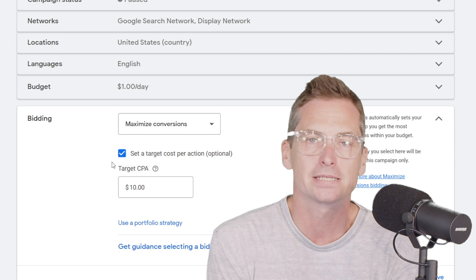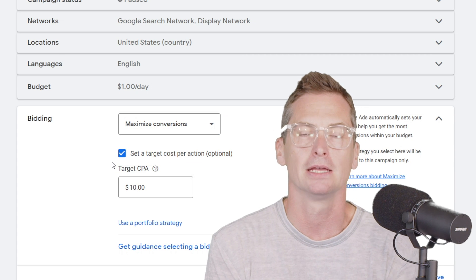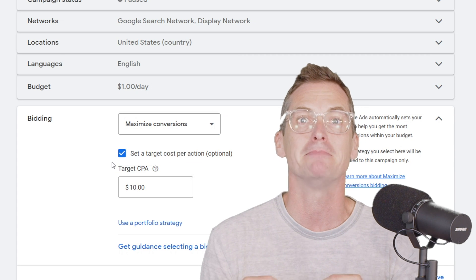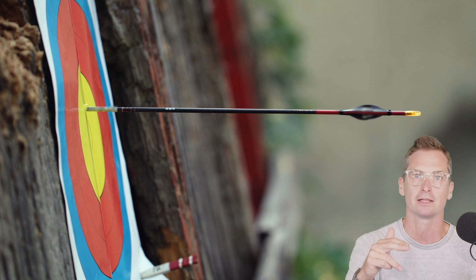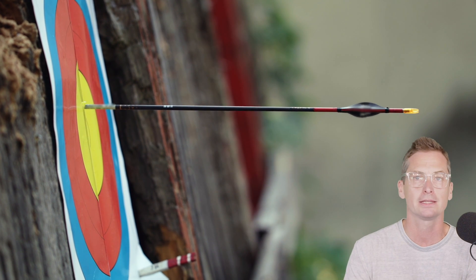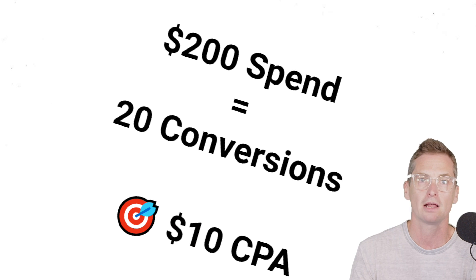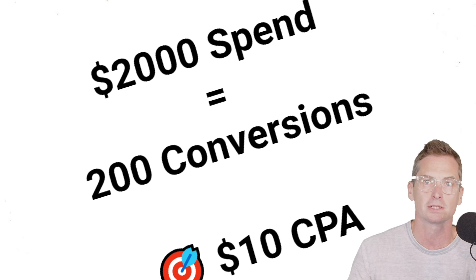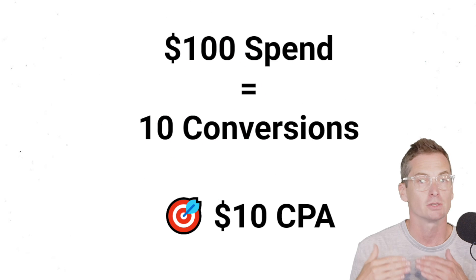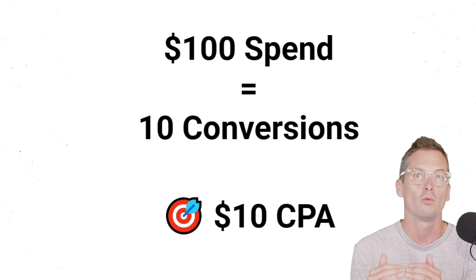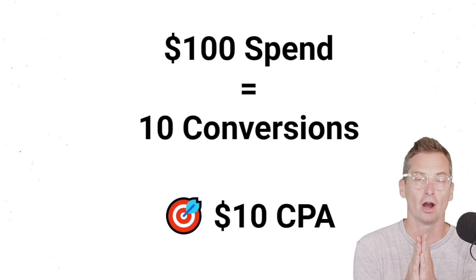The biggest benefit of Target CPA is that it is made to scale. We are shooting at that target, and it doesn't matter if our daily budget is $100 or $200 or $2,000 or $20,000 — we're still going towards that target. So in the previous example, we moved our daily budget from $100.